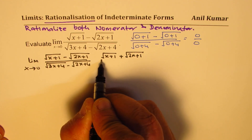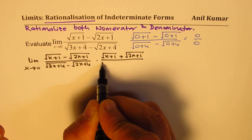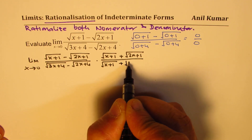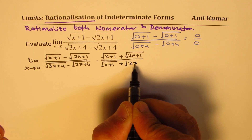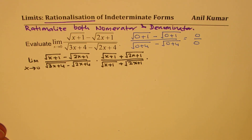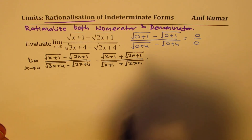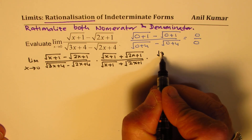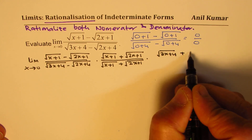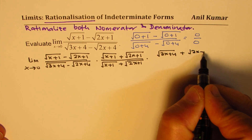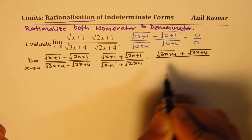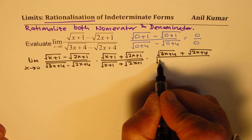So I multiply and divide by that same term — that is rationalization of the numerator. We also need to rationalize the denominator, so we multiply and divide by square root of (3x plus 4) plus square root of (2x plus 4). This is rationalization of the denominator.